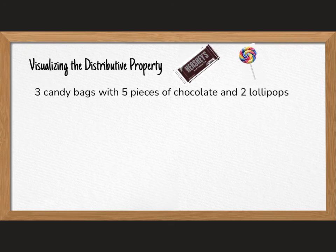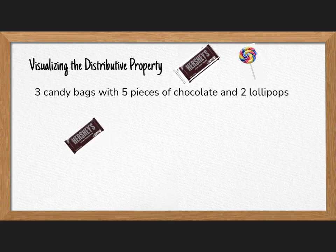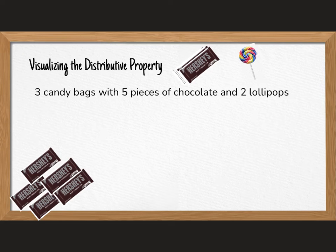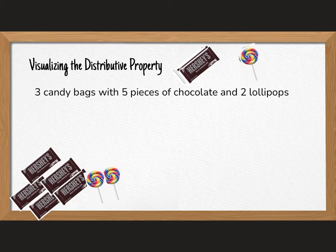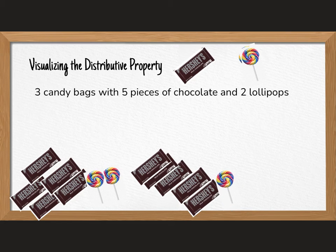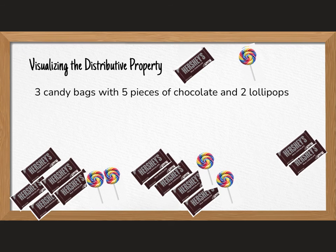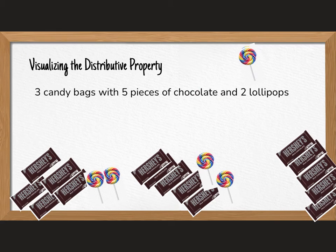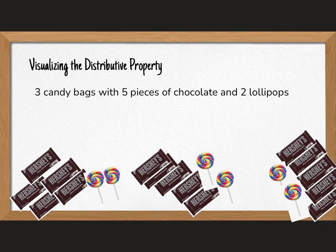Let's take a look at another example. This time we're going to visualize three candy bags with five pieces of chocolate and two lollipops. So we're going to make our three candy bags. So here is one of our candy bags with the five pieces and two lollipops. We're going to make another bag with our five pieces and our two lollipops and one more bag. We have five pieces of chocolate. And of course, I picked Hershey's because it's the best. Unless it's German chocolate. I will tell you that German chocolate is amazing. Or any chocolate that's not in the United States is usually pretty good.